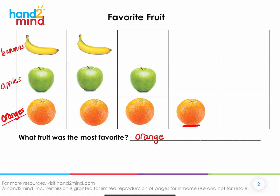I wonder if you could say: I know oranges is how much? It's four. And the apples are three. I know four is more than three, so that has to be the most. I can check the bananas — that is two. Yeah, that's another reason why that's the most.